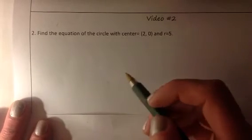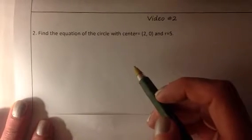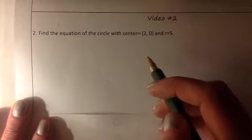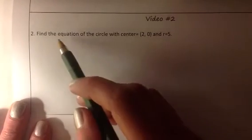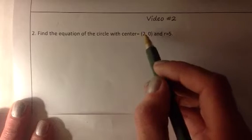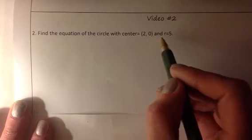Hi everyone, this is Ms. Madigan. Video 2 has us again using the distance formula. We want to find the equation of the circle with center point (2, 0) and a radius of 5.